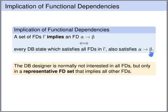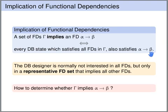As a designer of databases, we are usually only interested in a representative set of functional dependencies — a small set that implies all other functional dependencies that hold. We will now look at algorithms that allow us to check whether a functional dependency is implied given a set of functional dependencies gamma.